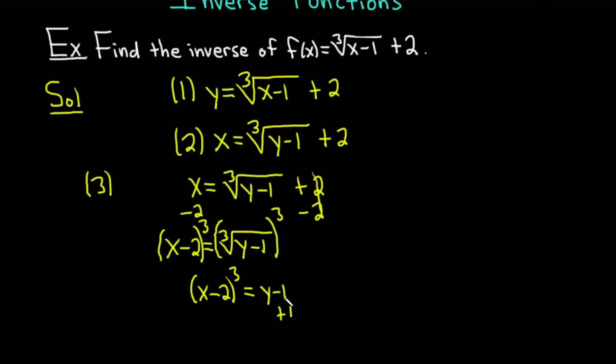Then we can add 1 to both sides, so plus 1 plus 1. So we end up with x minus 2 quantity cubed plus 1 equals y. And that looks weird, so usually what we do is we write the variable we're solving for on the left. So I'm going to write this as y equals parentheses x minus 2 cubed plus 1.